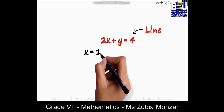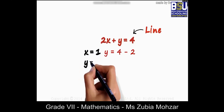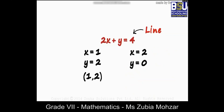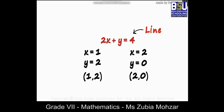Let's say x is 1: y will be 4 minus 2, which is 2. So (1, 2) will be the coordinates of one point. Now let's try x equal to 2: we get y as 4 minus 4, which is 0. So (2, 0) will be the coordinates of the second point. With these two points we can easily draw a line for this equation.